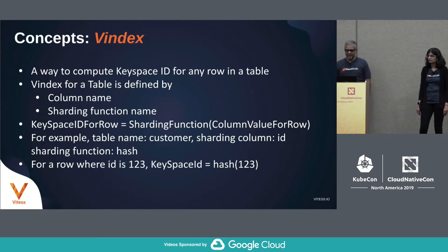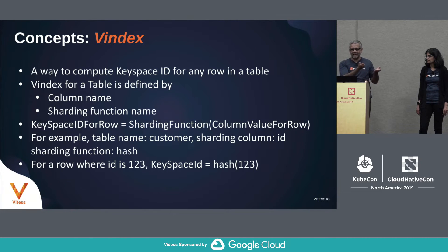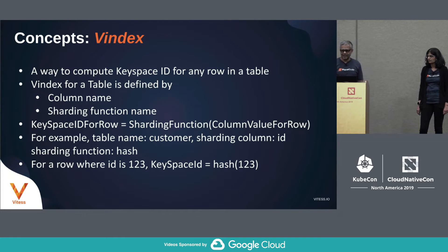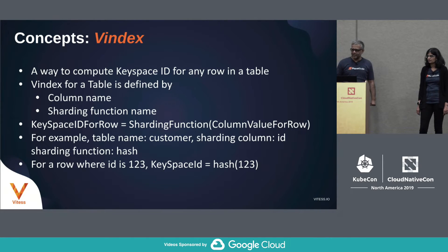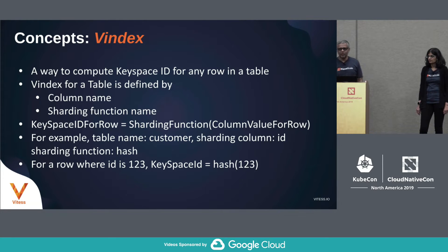A Vindex is how you tell Vitesse how to shard. We have extended relational semantics — sharded databases in Vitesse also have V schemas. Just as a table has an index, a table has a Vindex in Vitesse. A Vindex is a way for Vitesse to compute the keyspace ID for rows in a particular table. There are two elements: the column you want to use for sharding, and the sharding function. If it's a numeric column, you'd typically use hash. For varchar or text, you'd use a lossy MD5 hash or something similar. You can define a Vindex for every table using a column and a sharding function.